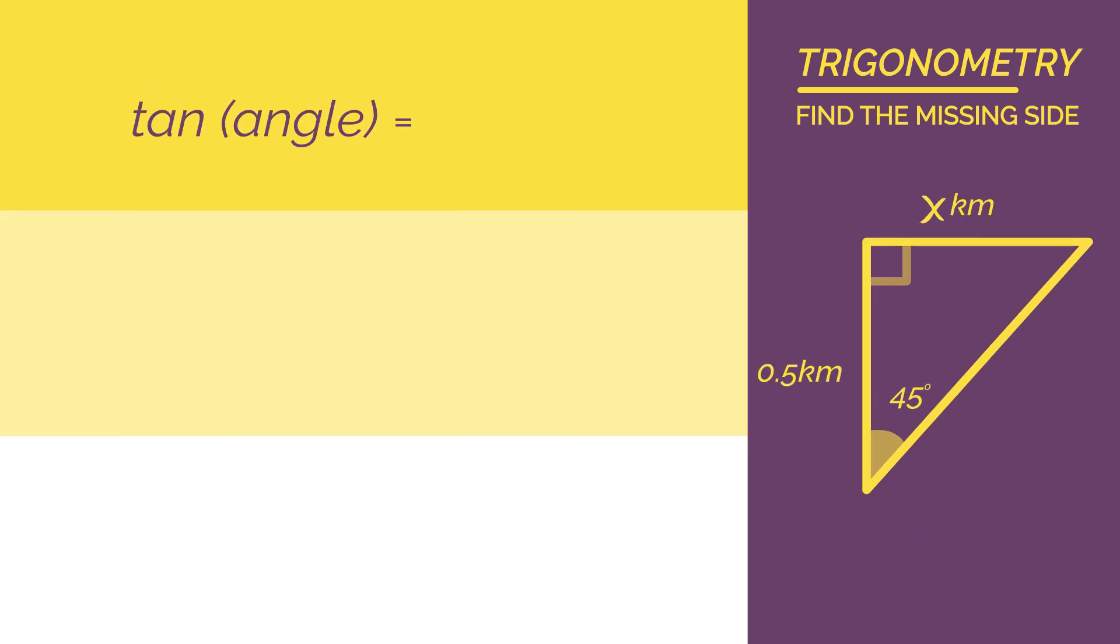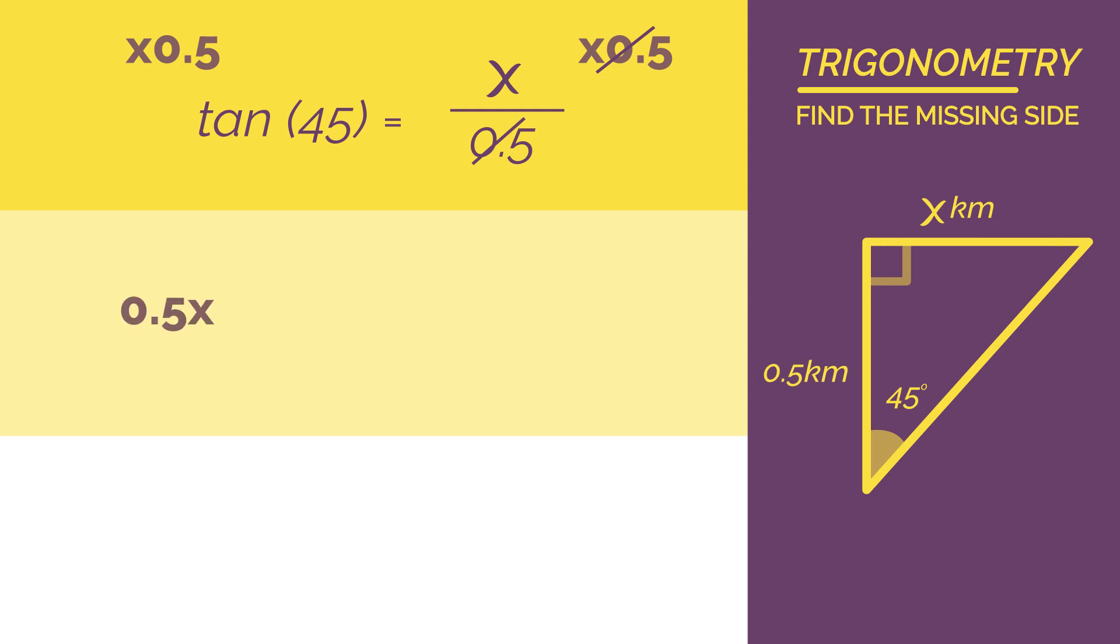So tan of the angle is opposite divided by adjacent. And let's substitute in our numbers and we get tan 45 equals x divided by 0.5. A little bit of rearranging, so we multiply both sides by 0.5. Type into our calculator, 0.5 times tan 45, and we get x equals 0.5km.